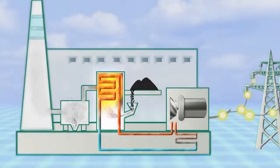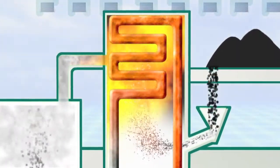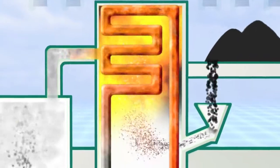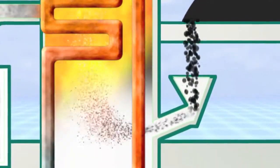The process starts with the boiler, which is a furnace where combustion takes place. Pulverized coal is injected with a stream of air into the furnace in a continuous process through a device known as a burner.